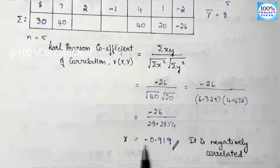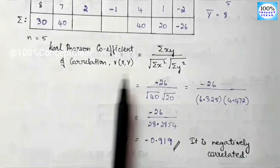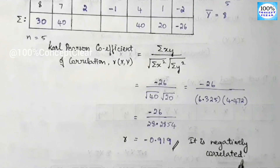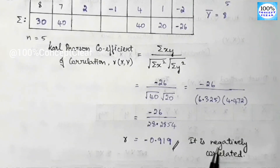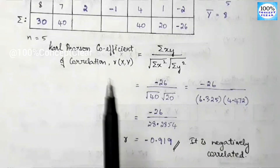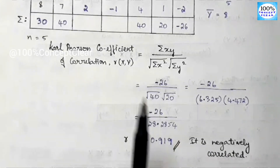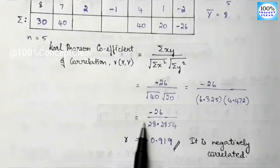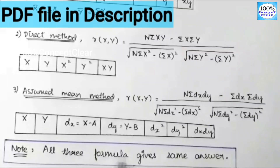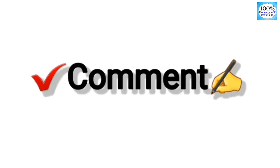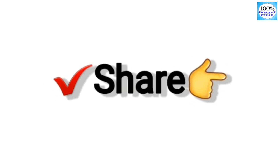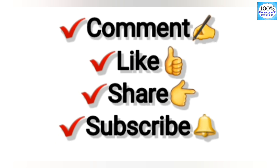Since the result is −0.919, the two variables x and y are negatively correlated. This means that when the x variable increases, the y variable decreases. If you have any doubts, please like and share this video. Subscribe to our channel for more topics. Thank you for watching.